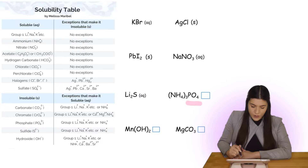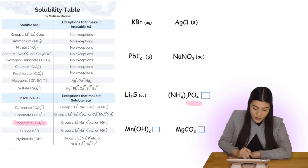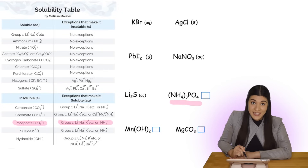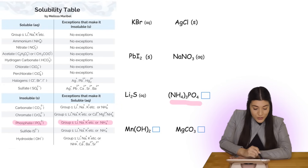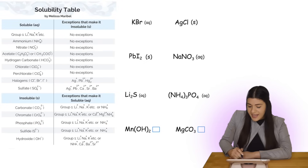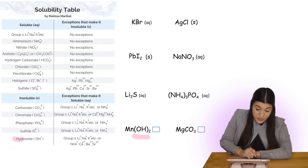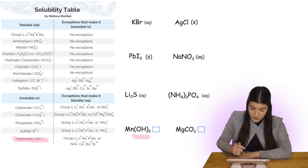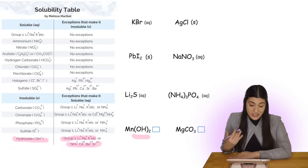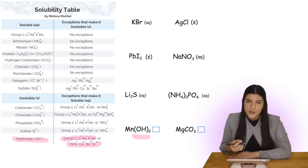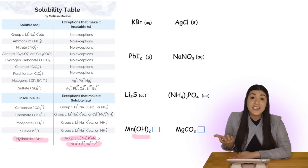Next we have phosphate — PO4 is typically insoluble. However, the exceptions are Group 1 metals or ammonium, which is exactly what we have at the beginning of this compound. Since it falls under one of our exceptions, this is soluble — it's aqueous. Next, hydroxide or OH: typically insoluble with the exception of Group 1 metals, ammonium, or these other listed metals. Manganese does not fall under any of these exceptions, so it's a solid or insoluble.